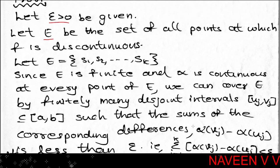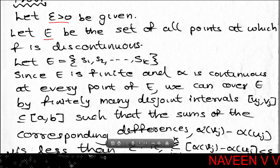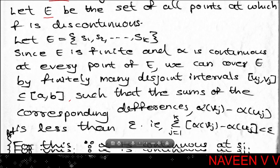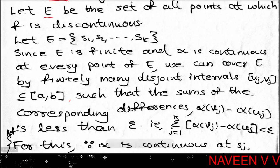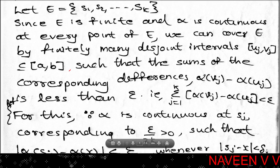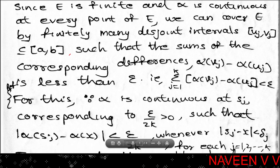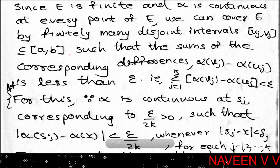Let E be the set of discontinuities of f, where E equals {s_j : j = 1, 2, ..., k}, a finite set, and alpha is continuous at each point of E. We can cover E by finitely many disjoint closed intervals [u_j, v_j] subset of [a, b] satisfying the condition that the sum of corresponding differences — summation j=1 to k of (alpha(v_j) minus alpha(u_j)) — is less than epsilon.